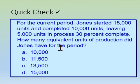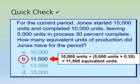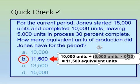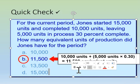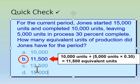Here's a quick check on equivalent units. For the current period, Jones started 15,000 units and completed 10,000, leaving 5,000 units in process at 30% complete. The equivalent units of production for Jones are 11,500. We had 10,000 units started and completed, and then 5,000 units times 30% equals 1,500 equivalent units — add that to 10,000 to get 11,500.